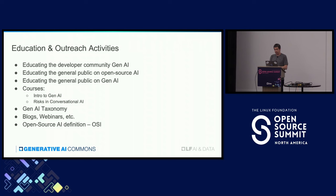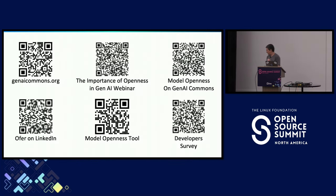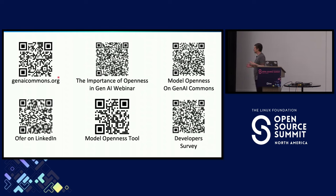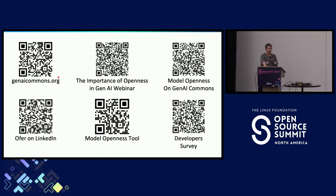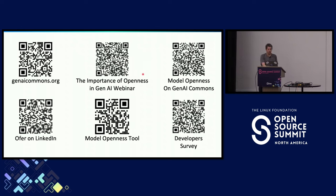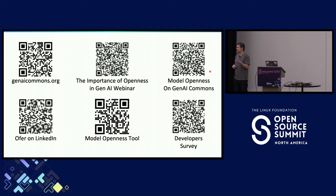On the top left we have the Generative AI Commons website with all the information, blogs, and links to webinars. We have a very interesting webinar on the 24th about the importance of openness in gen AI — if you want to register, the link is there. I mentioned the Model Openness Framework — there is a Google Doc where you can submit your opinions and we are looking for more contributions and feedback from the public.